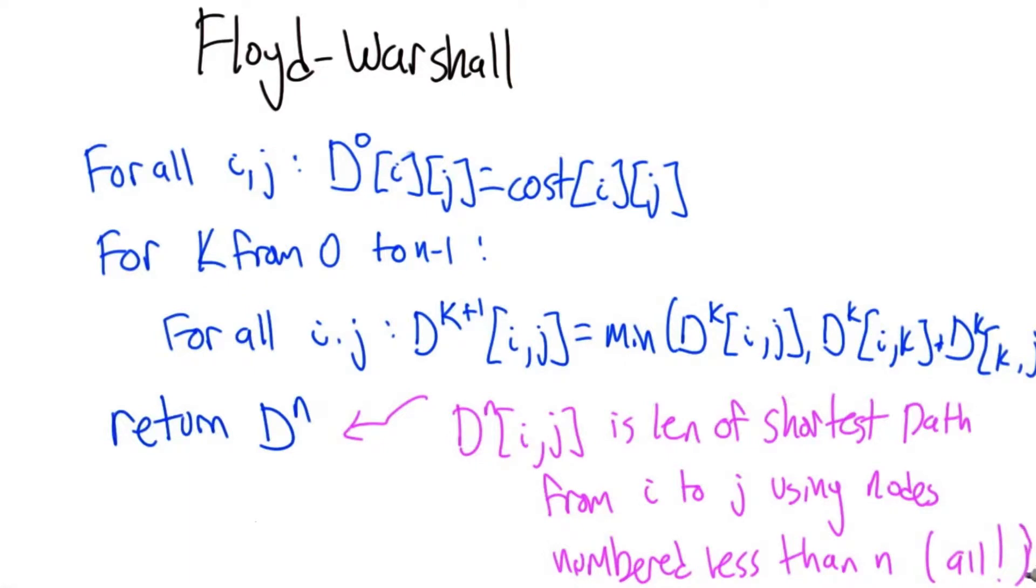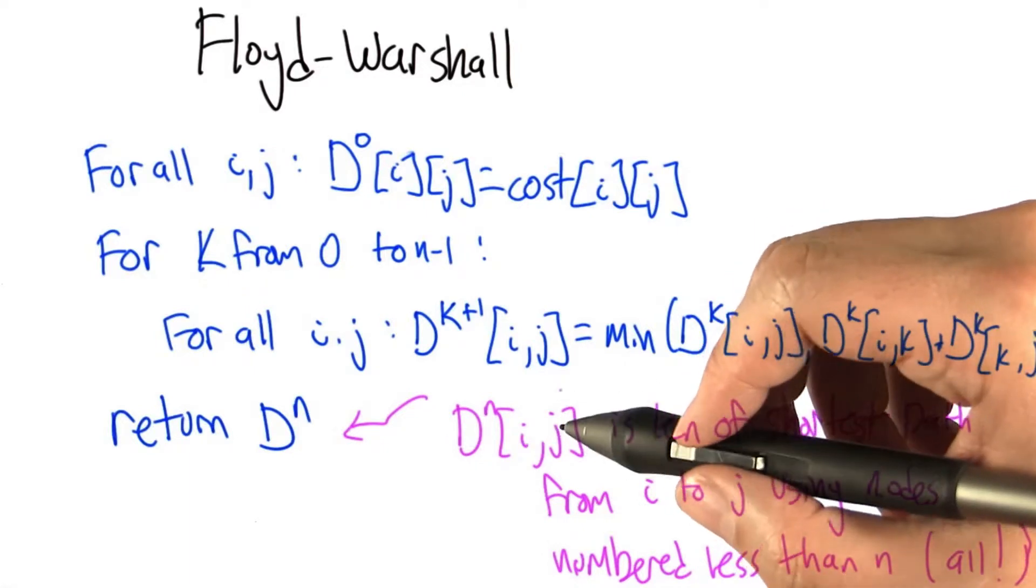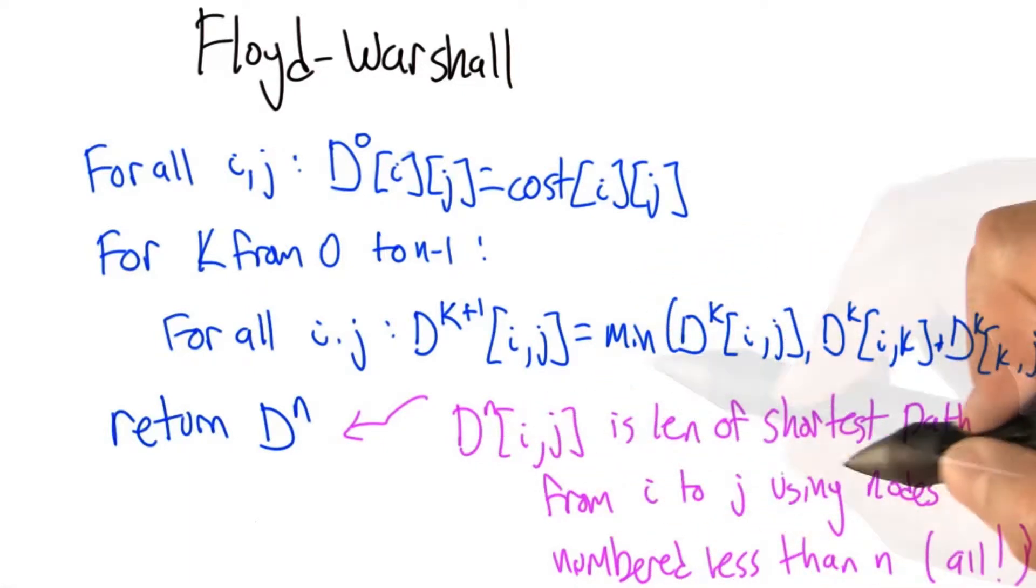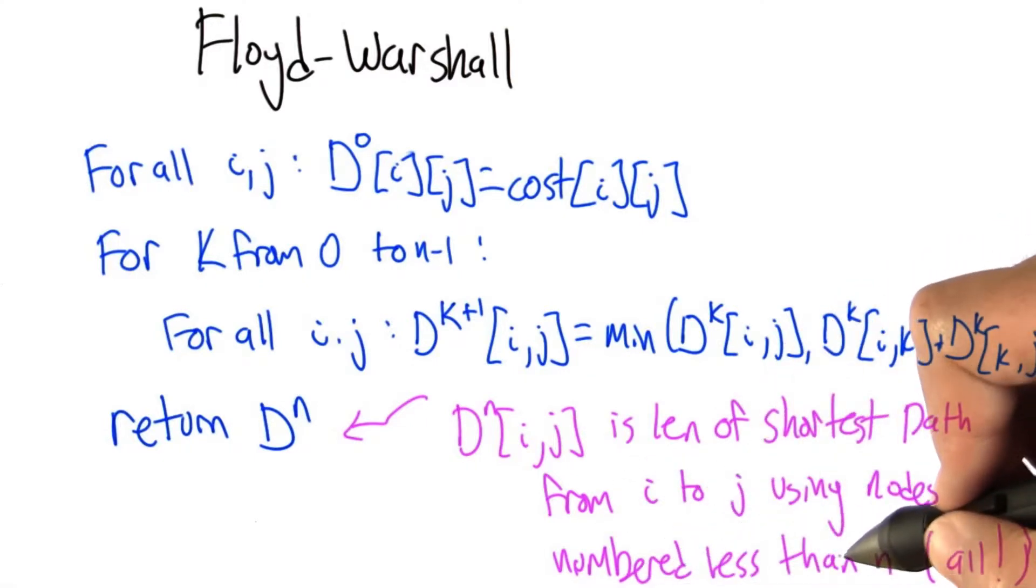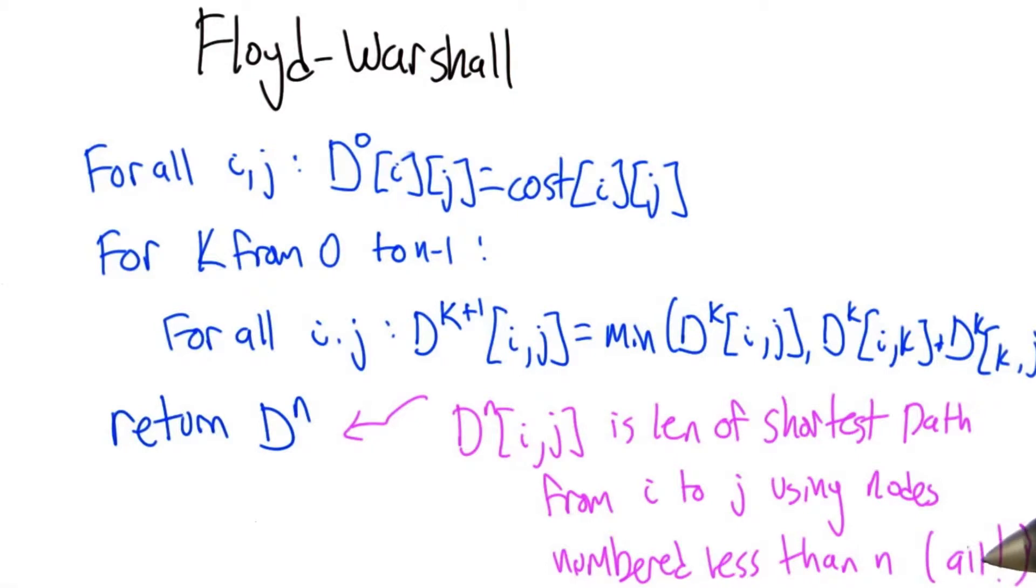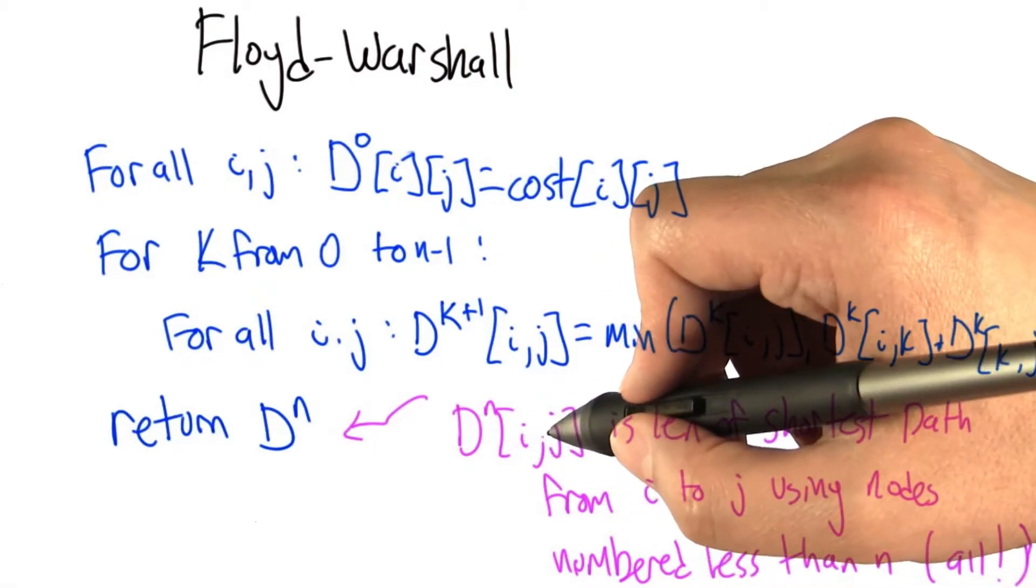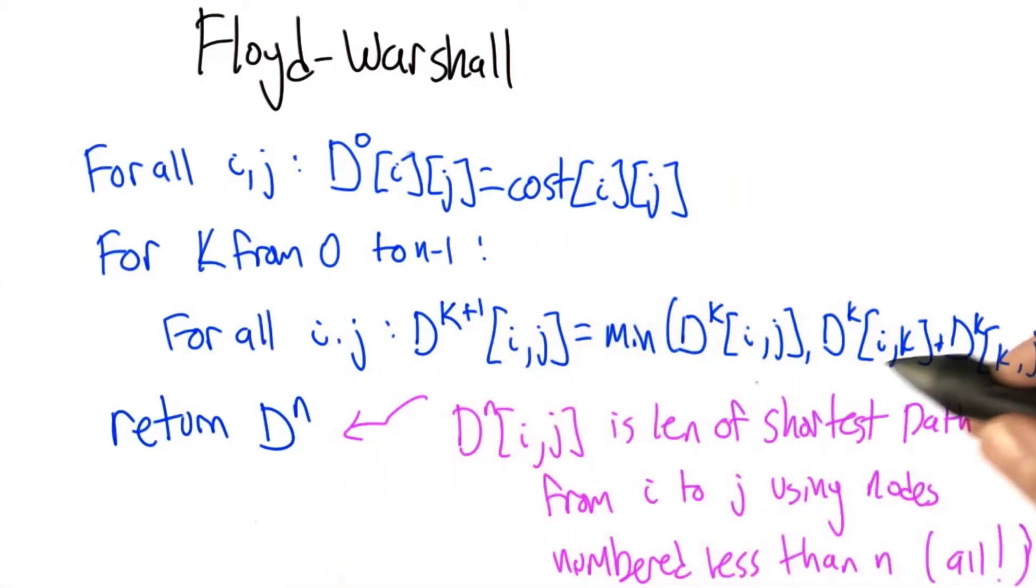When this loop is done, we have D^n. D^n[i,j] is the length of the shortest path from i to j only hopping on nodes numbered less than n, but that's all the nodes—they're all numbered from 0 to n-1. So this is the length of the shortest path from i to j, unrestricted, full stock. That's pretty cool.